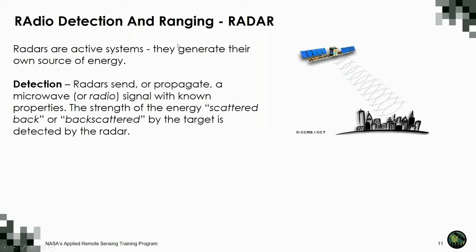Radars are active systems, meaning they generate their own source of energy. RADAR is an acronym: radio detection and ranging. Radars do two things. First, they detect — a radar sends or propagates a microwave signal with known properties: its polarization, frequency, the angle it's propagated at, and the intensity and phase associated with that wave. Then the microwave signal interacts with the target on earth, energy is scattered back, and it is recorded by the sensor, capturing not just intensity but also characteristics like phase.